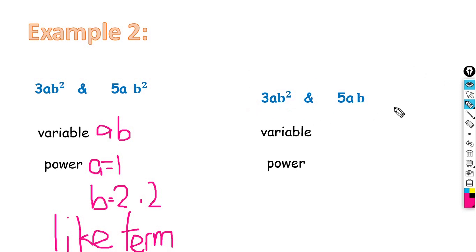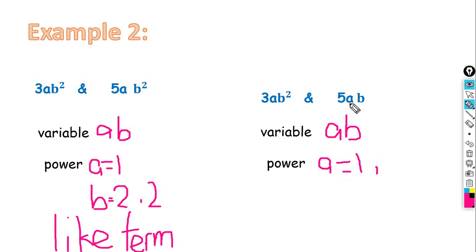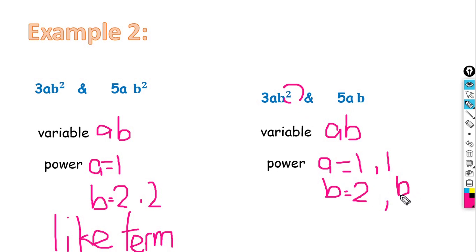Now let's look at another example: 3AB² and 5AB. First we check the variables — the variables are the same: A and B. How about the power? The power of A for the first term is 1, and for the second term is 1 as well. But the power of B for the first term is 2, while the power of B for the second term is 1. Although the variables are the same, the powers are different, so we can consider these as unlike terms.